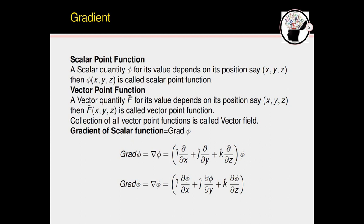A vector point function is a vector quantity F whose value depends on its position (x, y, z). Then F⃗(x, y, z) is called a vector point function. The space related to this vector point function is called a vector field. This vector point function is also a function of x, y, z but it contains i, j, and k components.